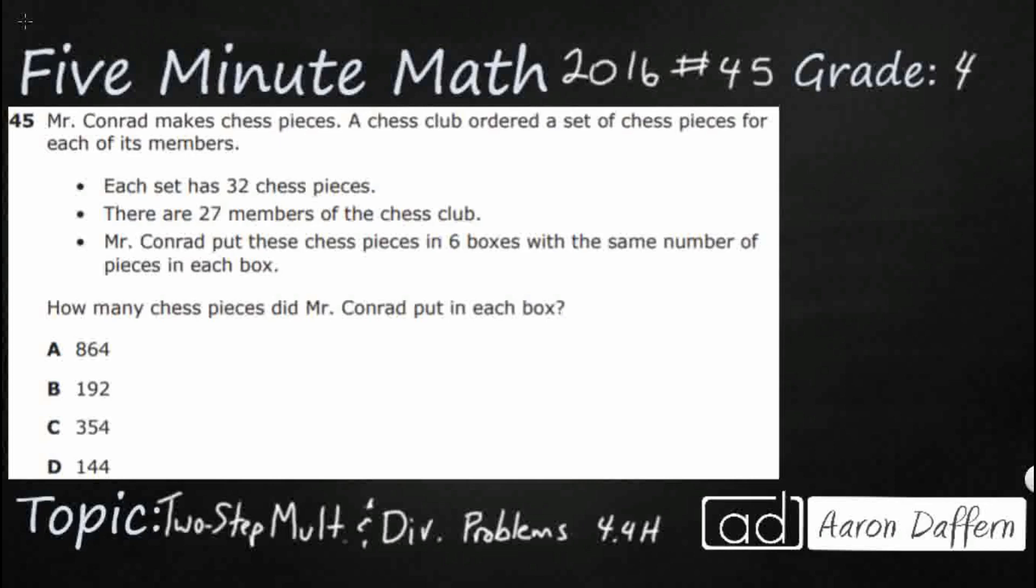So we've got Mr. Conrad here making chess pieces, and a chess club ordered a set of chess pieces for each of his members. We're going to have some different bullet points here that give us interesting pieces of information to help us solve this problem. Each set has 32 chess pieces. There are 27 members of the chess club. And Mr. Conrad put these chess pieces into six boxes with the same number of pieces in each box. Now that's going to be important right here. We've got the same number of pieces in each box.